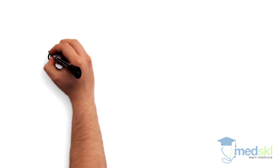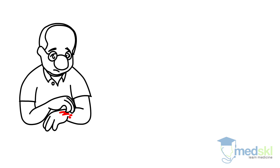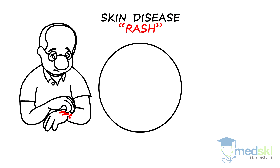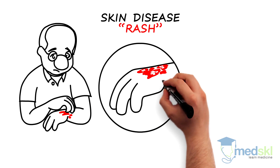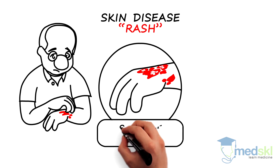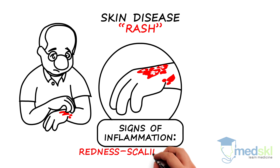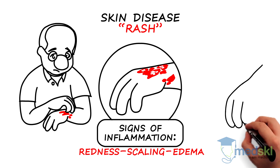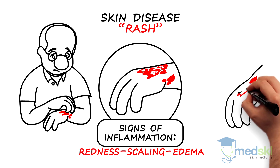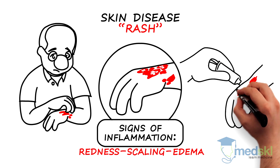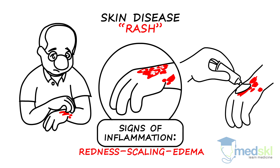The first group are patients who are itchy because they have a skin disease or a rash. These patients should have some signs of inflammation in their skin, such as redness, scaling, or edema. For these patients, treating their skin disease should also treat their itch.